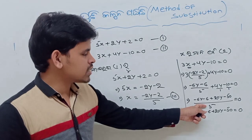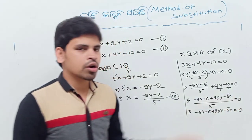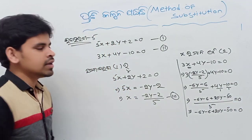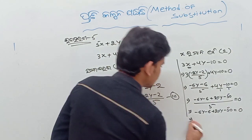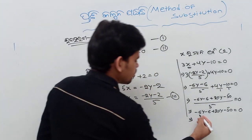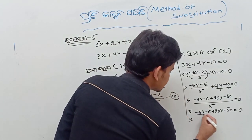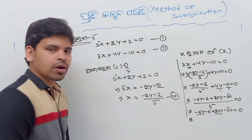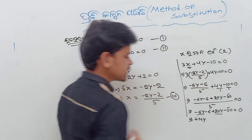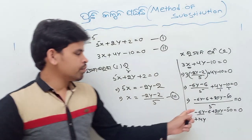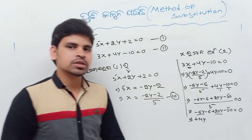5 into 5, 0 into 5, 5 into 5, minus 6y. Plus 20y, minus 6y plus 20y. 13y plus, 13y, minus plus confusion, plus minus.